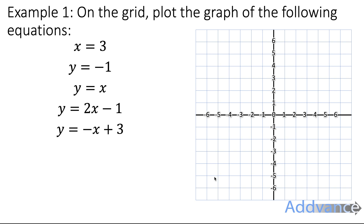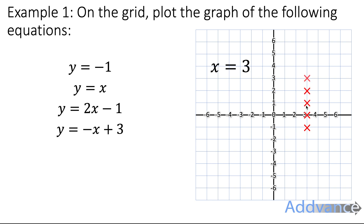The first two are really easy because it's x equals a number or y equals a number. So let's start with x equals 3 — this is a line of all the x-coordinates where x is equal to 3. We can plot points here where x equals 3, and all of these points have the x-coordinate of 3. We connect those up with a straight line, and so every point on that straight line, x is equal to 3.